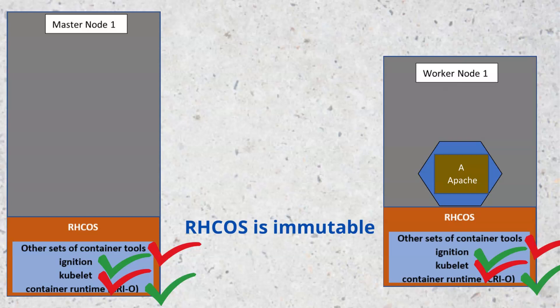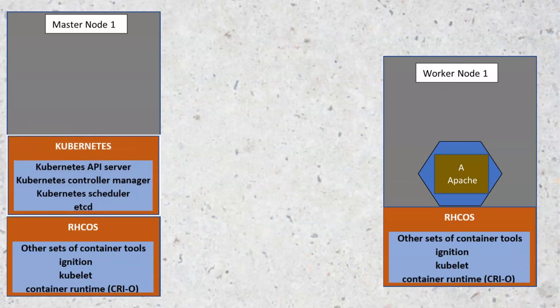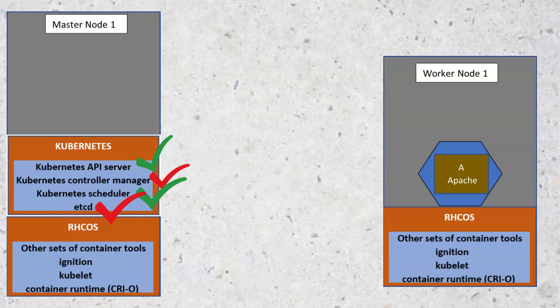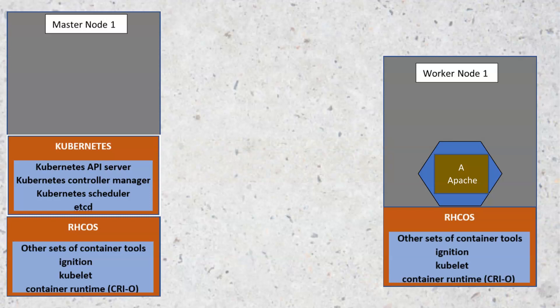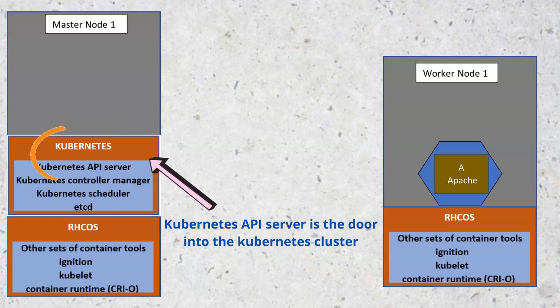On top of the Red Hat Core Operating System we have the Kubernetes layer. Don't forget that OpenShift is built on top of Kubernetes and RHCOS. The Kubernetes layer consists of Kubernetes services such as the Kubernetes API, the Kubernetes controller manager, the Kubernetes scheduler, etcd, and more. The Kubernetes API is like a door to the Kubernetes cluster — before you can interact with Kubernetes, you need to come through the Kubernetes API. The Kubernetes API then validates the credentials and does the authentication into the Kubernetes cluster.